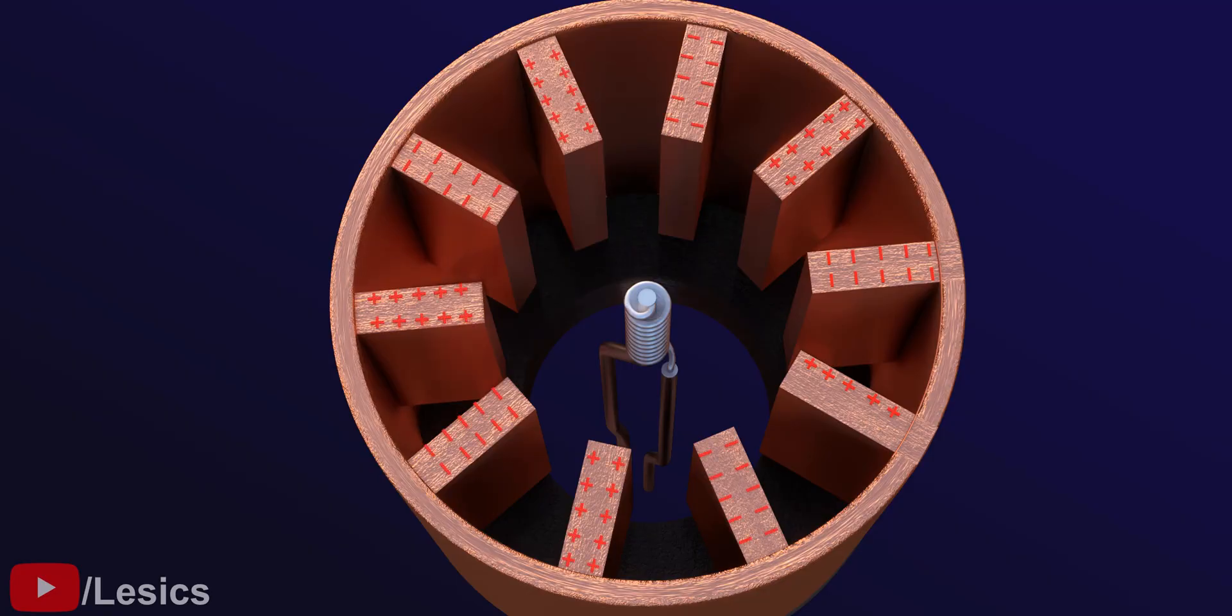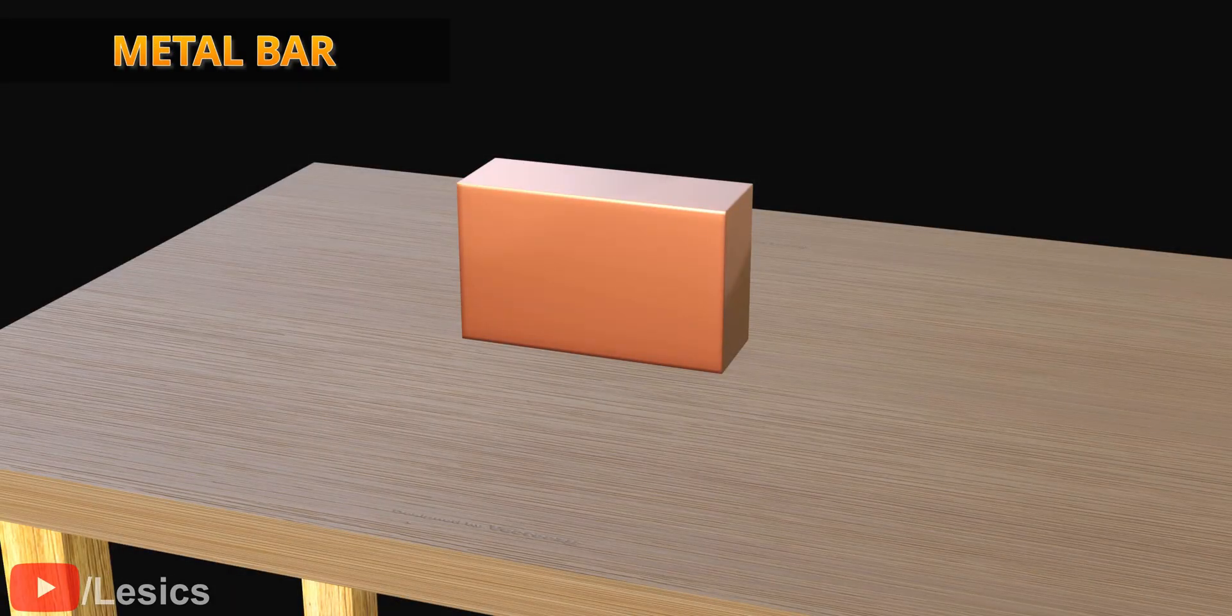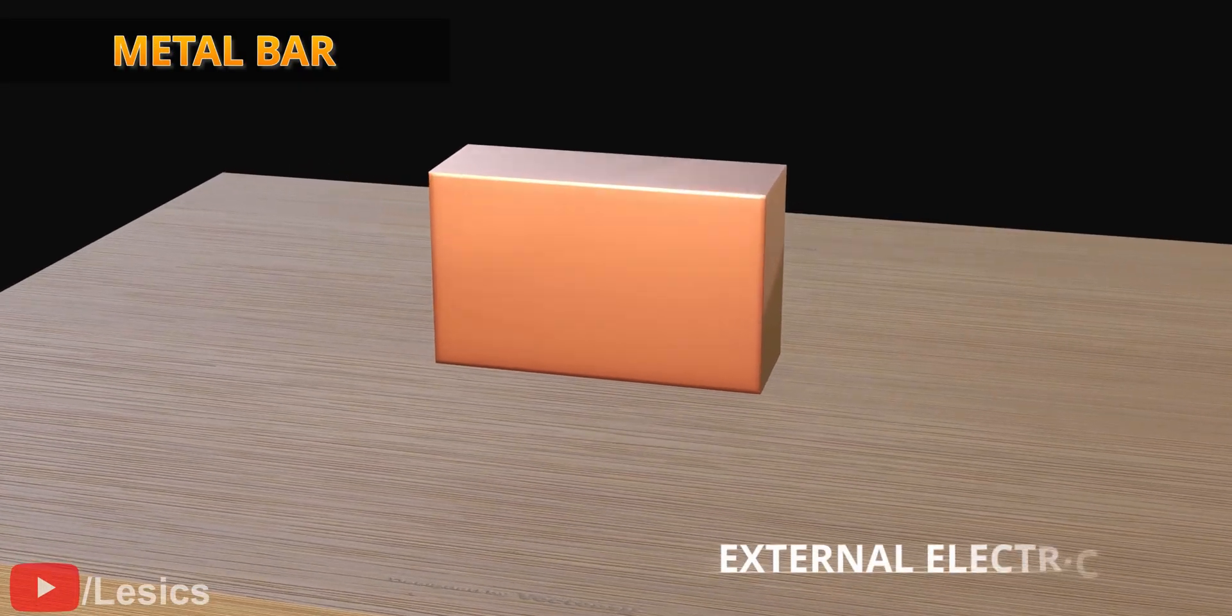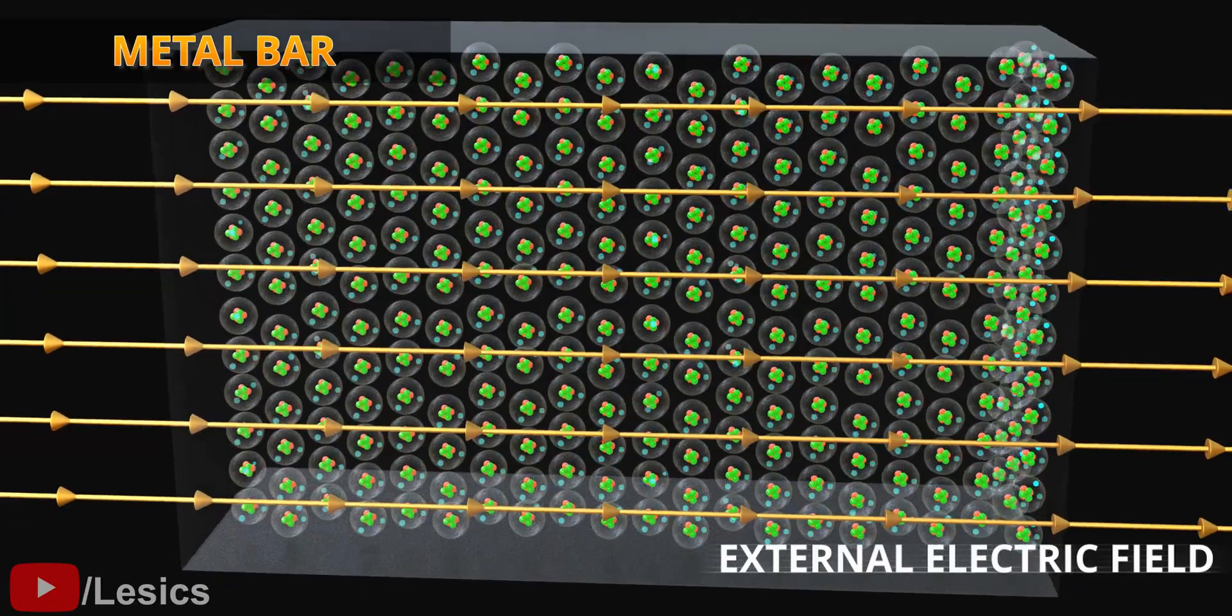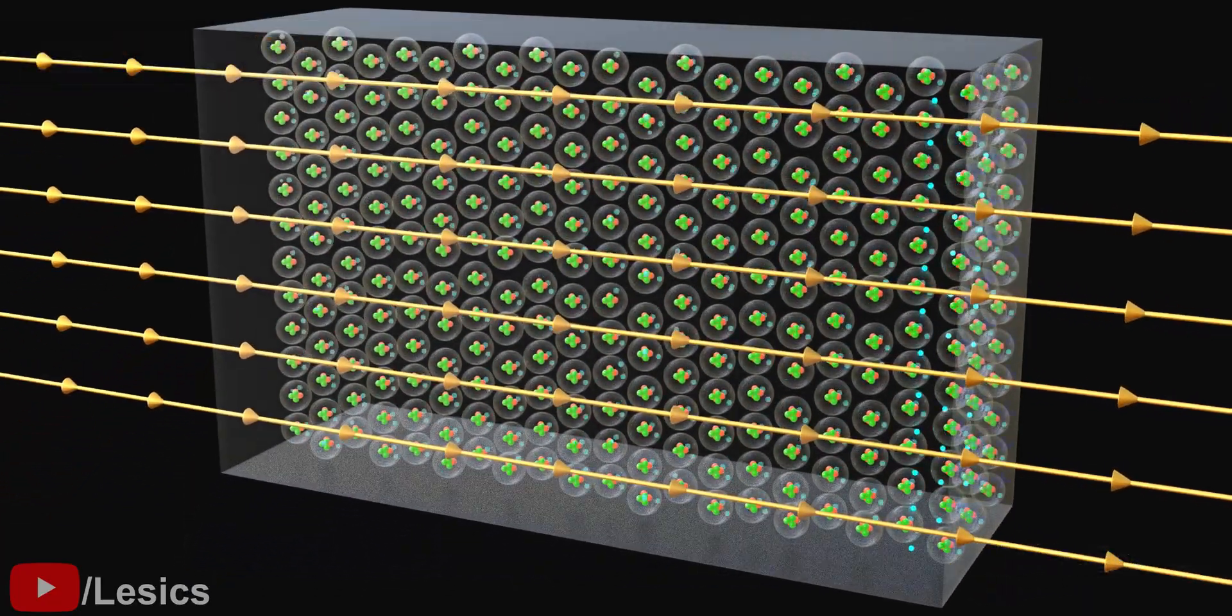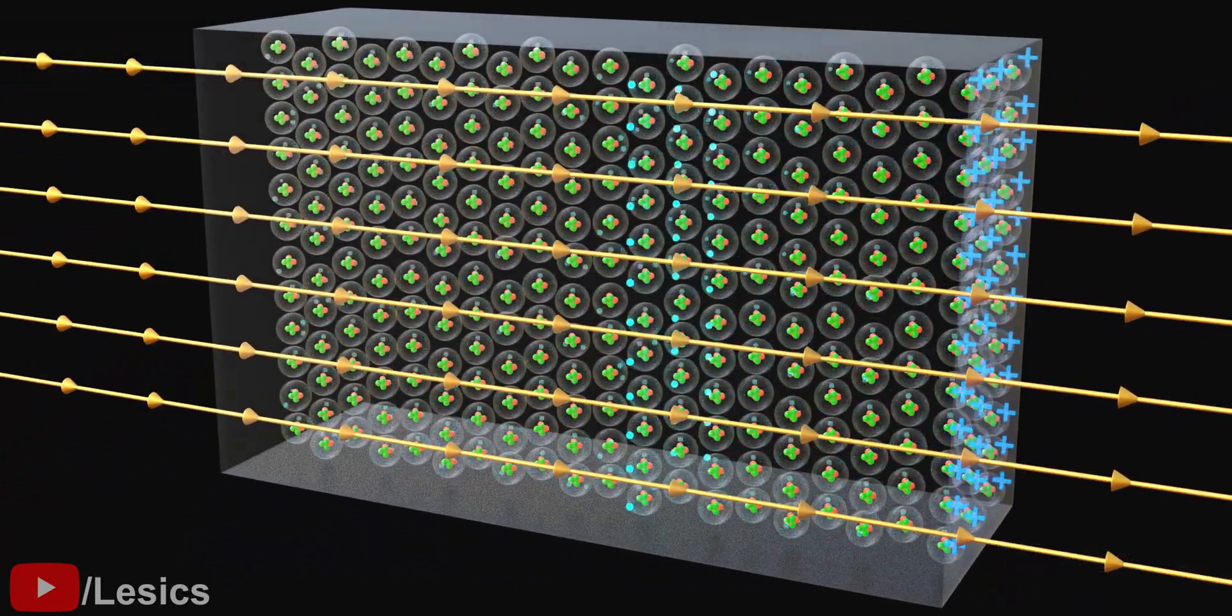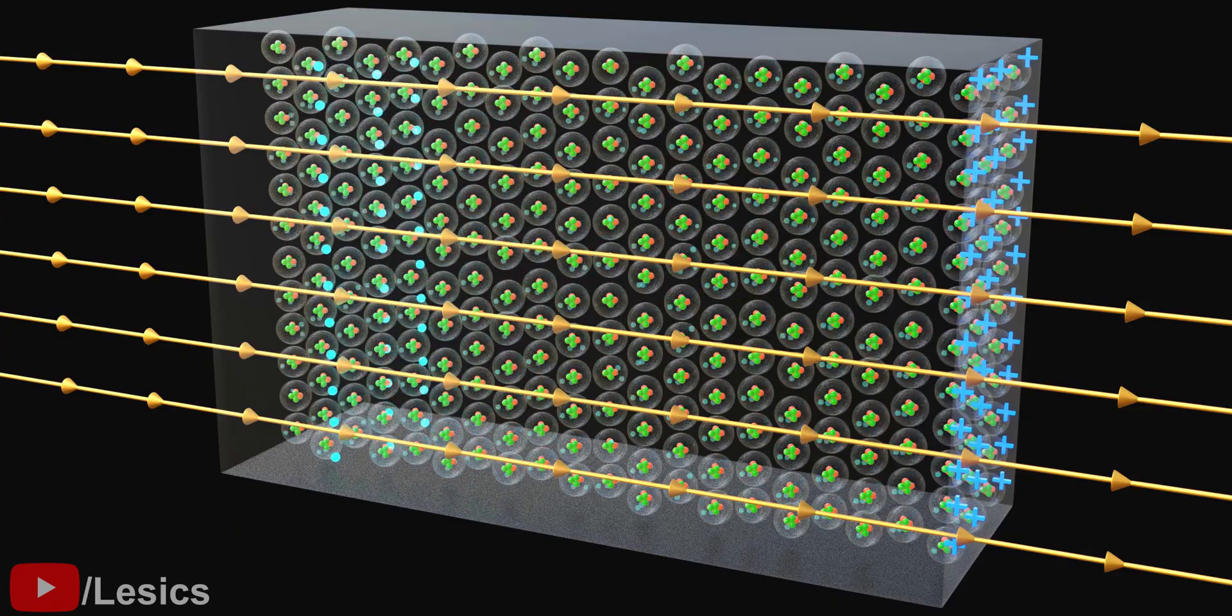In order to find the answer to this question, let's consider a metal bar. Assume an external electric field is applied to it. This electric field disturbs the free electrons in the metal and develops charges on the surfaces at both ends.